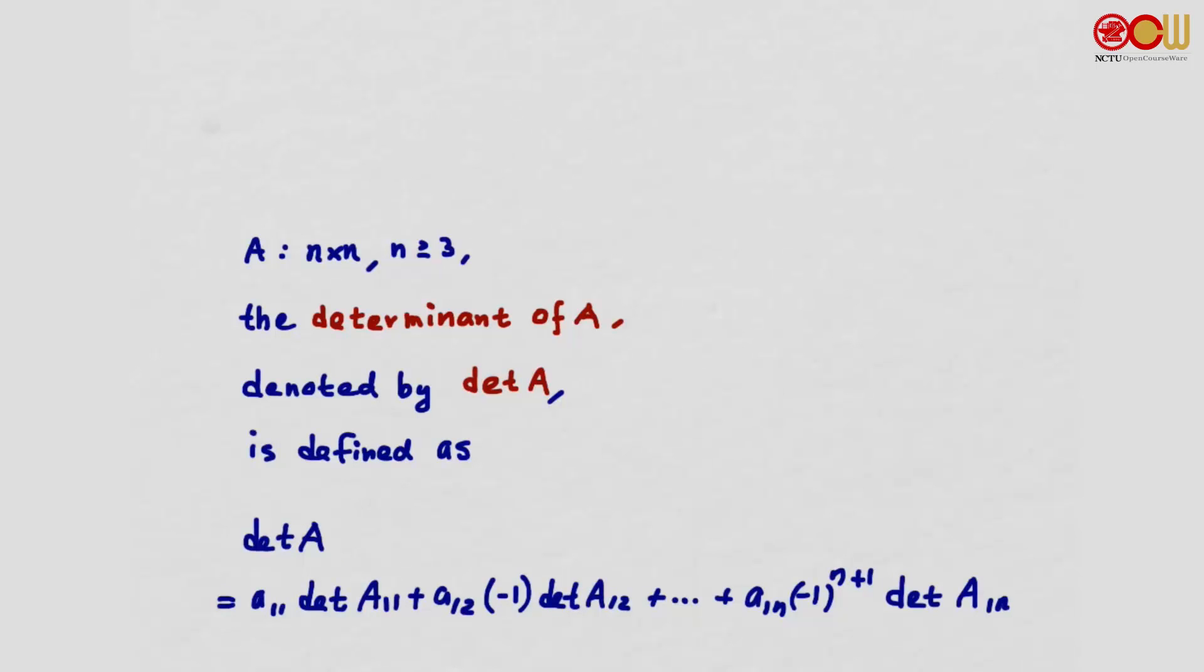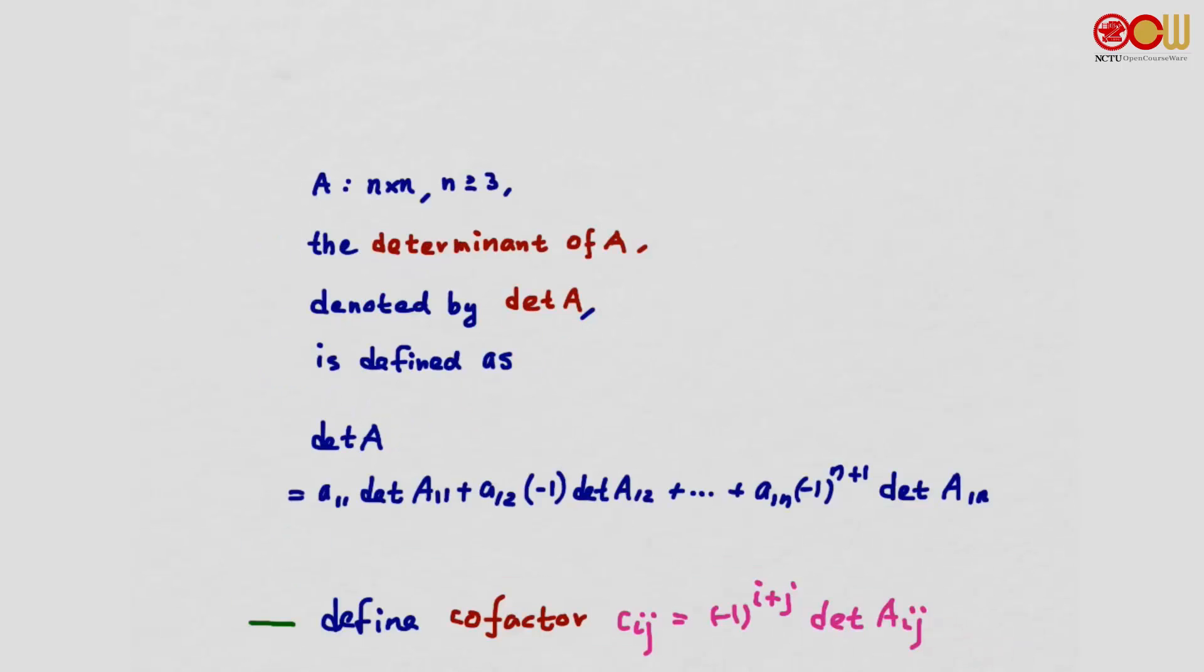Now let us define the determinant of a matrix A, n by n with n greater than or equal to 3. The determinant of A is defined as A11 times det(A11) minus A12 times det(A12) all the way to A1n times (-1)^(n+1) times det(A1n).